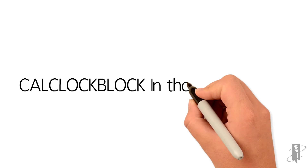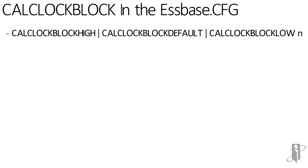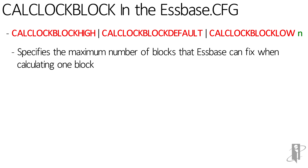There's no single Calc Lock Block setting. You have different settings for the high number of blocks you might want to lock, the default number, or a low number. Each one of these would be a line in your Sbase CFG — that setting, then a space, then the number of blocks you actually want to lock. It doesn't always lock exactly that number; that's essentially the maximum number of blocks it will lock when you tell it to use that setting.